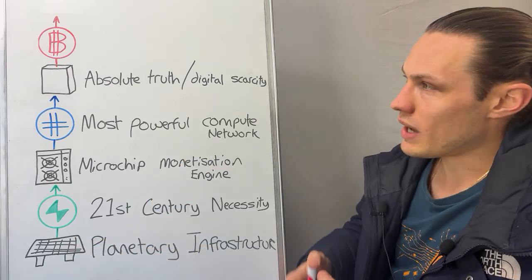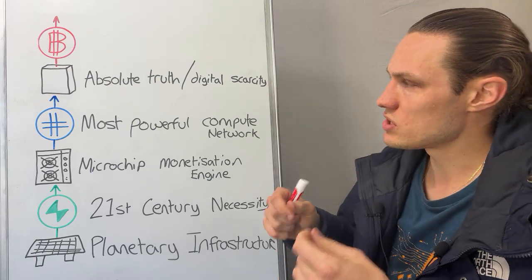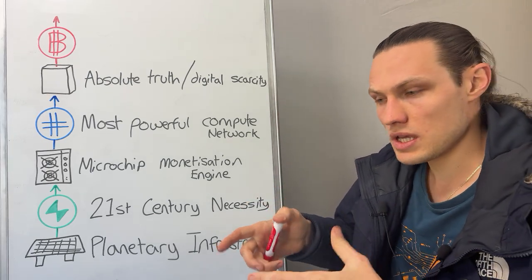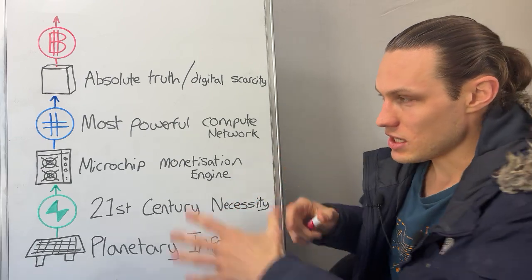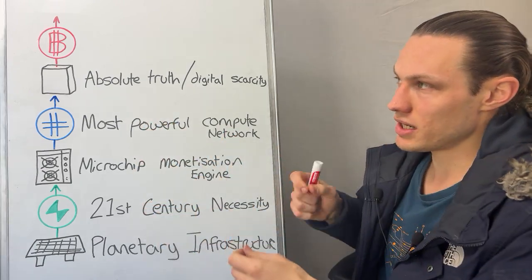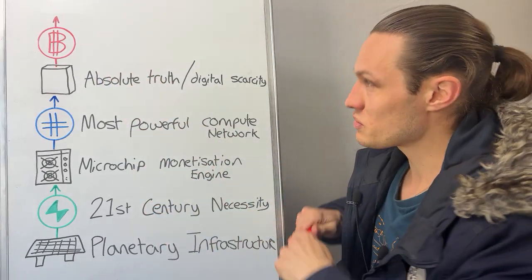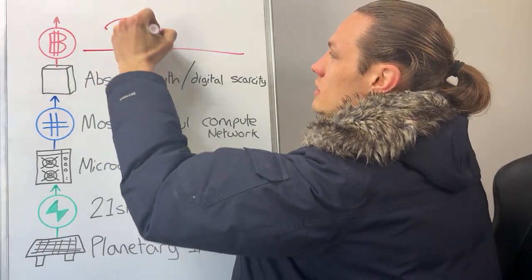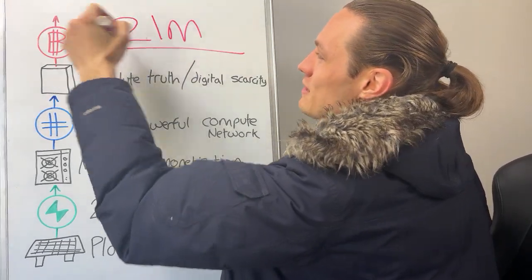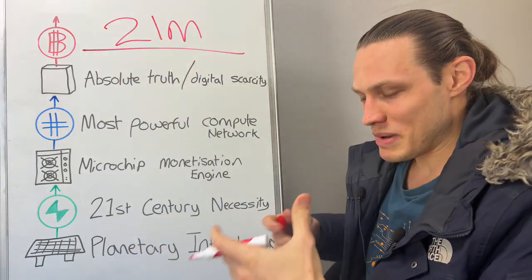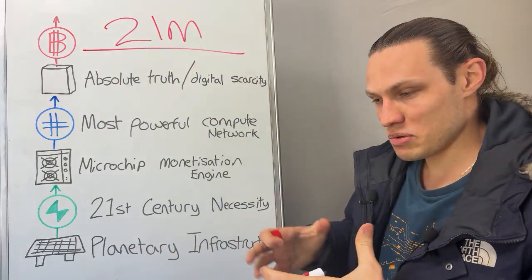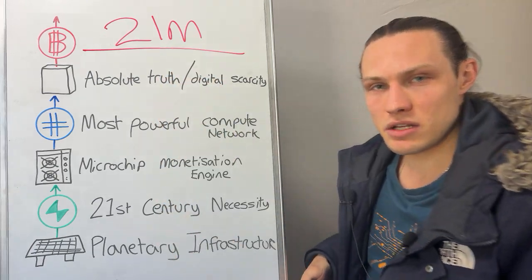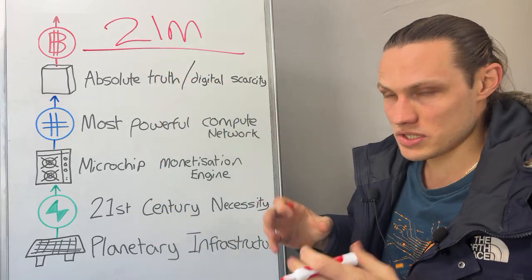Bitcoin provides a place of absolute digital scarcity — a source of truth, freedom of speech preserved — with all the energy required to produce it directly priced against a fixed supply of 21 million units. Everything we've discussed: expanding, innovating, building prosperity for society, is ultimately priced against those 21 million units on this database.